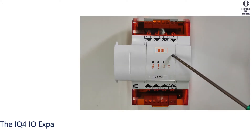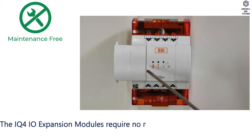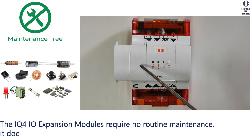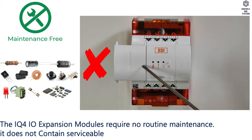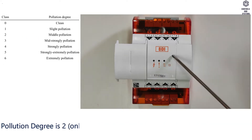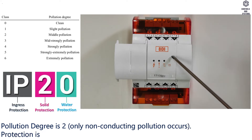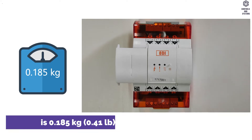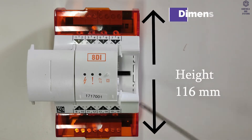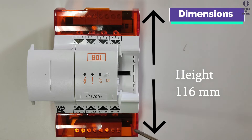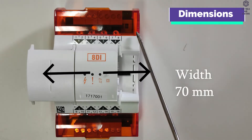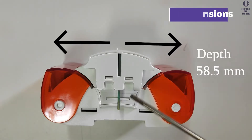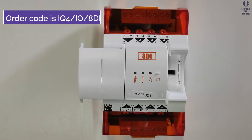The IQ4 I/O expansion modules require no routine maintenance and do not contain serviceable parts. Pollution degree is 2 — only non-conducting pollution occurs. Protection is IP20. Weight is 0.185 kg. Dimensions: height 116 mm, width 70 mm, depth 58.5 mm. Order code is IQ4 I/O 8 D.I.